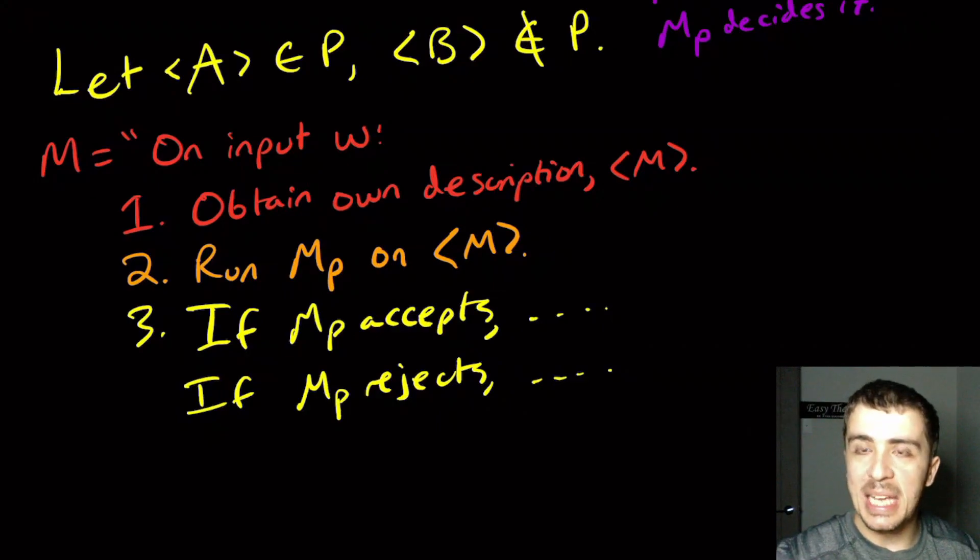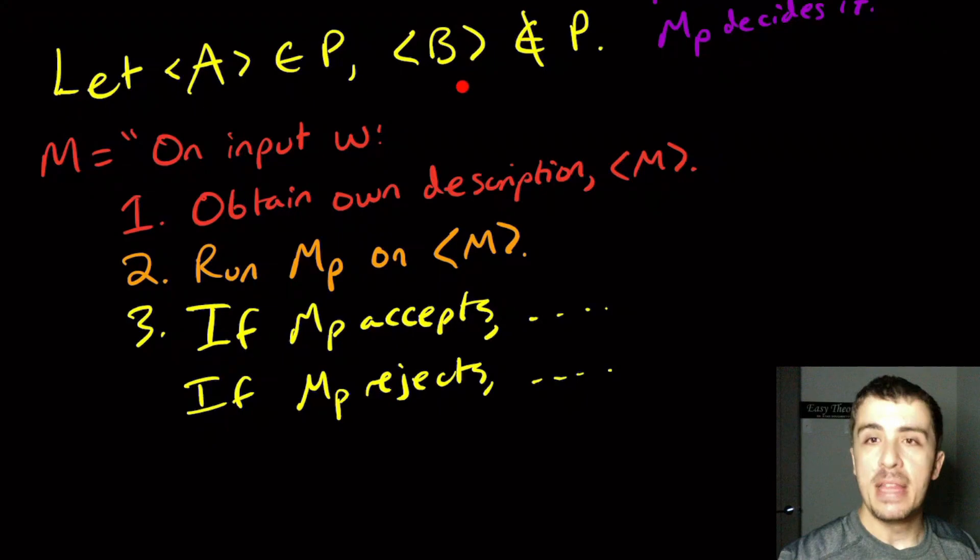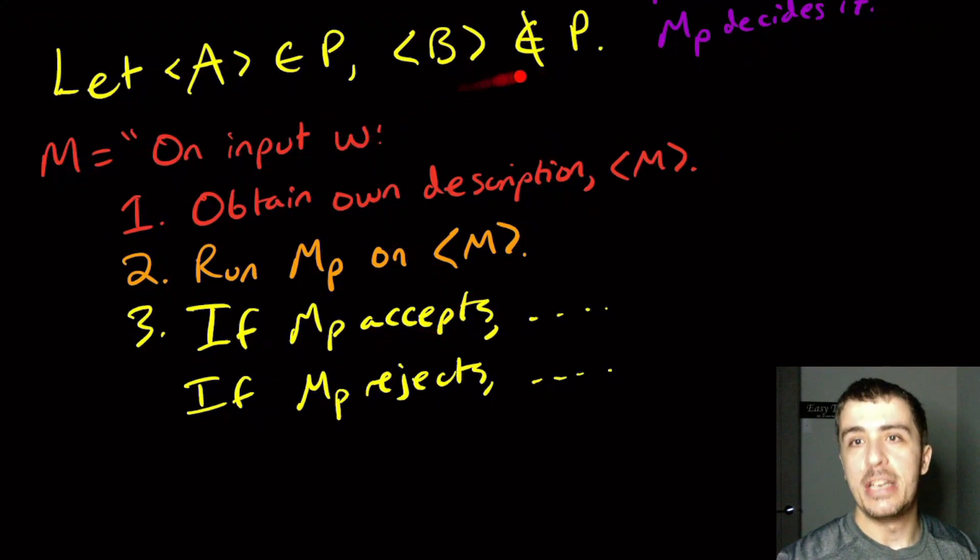But if we simulate B on this input W, effectively making M and B the same machine, they do the same thing, they accept the same strings, then that implies that M is both in P and not in P.